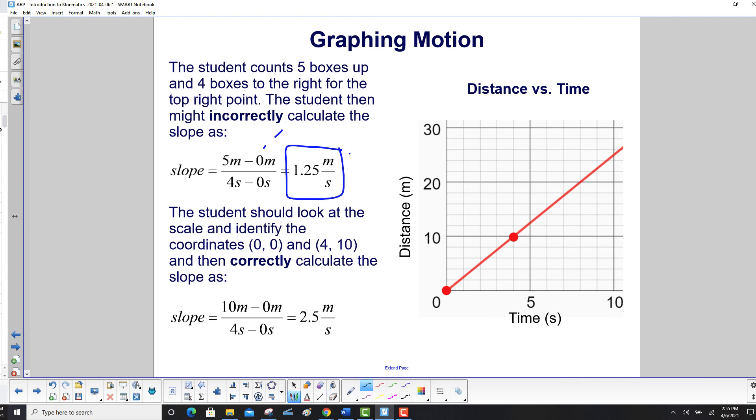So let's look what the student should have done. The student should look at the scale and identify the coordinates zero, zero right here. And then the other one is four and ten. And then correctly calculate the slope as ten minus zero, change in y, over change in x, and get 2.5 meters per second.